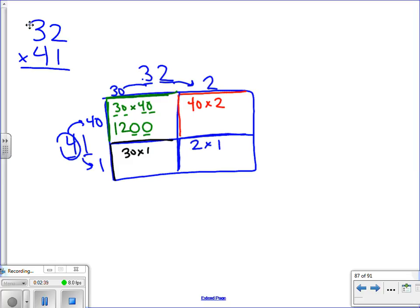Moving on, 40 times 2. We're going to do 4 times 2 is 8. And again, I'm going to have a zero in the one's place because there's a zero in 40, in the one's place.